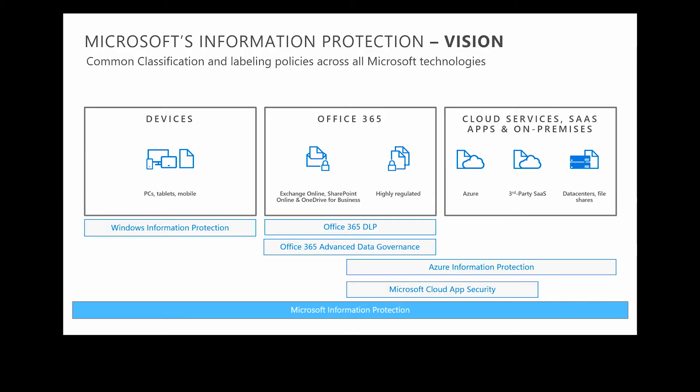This slide highlights our vision for information protection as a whole across Microsoft. You can see we've got some fragmentation across the different areas of our technologies that cover different platforms. Under devices, we have Windows Information Protection. Under Office 365, we have O365 DLP and Advanced Data Governance. Azure Information Protection bridges the gap between our on-prem existing file servers, SharePoint servers, and Office 365, so we're able to apply classification and protection to those documents. As they traverse between those locations or externally, the documents remain protected.